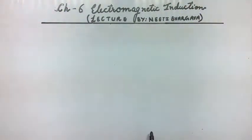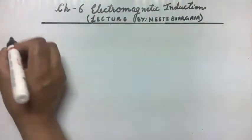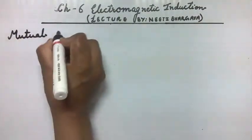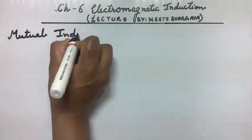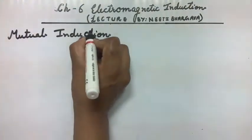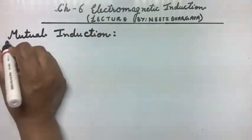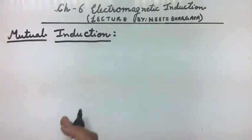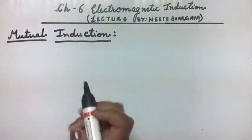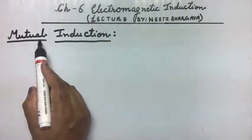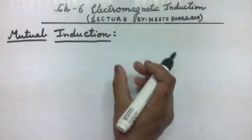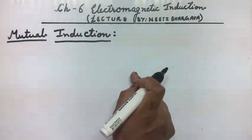In continuation with this chapter, let's study the last and one of the important topics: mutual induction. In the previous video we studied self-induction, which is the method of inducing EMF in a coil by itself. Here, mutual induction is also a method of inducing EMF, but by a coil placed near to it — the coil which is connected through a battery.